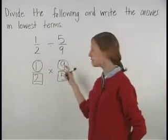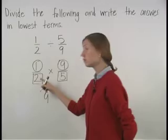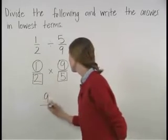So we have one times nine, which is nine, and two times five, which is ten.